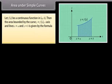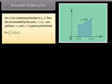Let f(x) be a continuous function in [a, b]. Then the area bound by the curve y = f(x), the x-axis, and the lines x = a and x = b is given by the formula: A = |∫ from a to b of f(x) dx|, provided f(x) ≥ 0 or f(x) ≤ 0 for each x in [a, b].